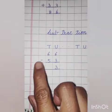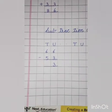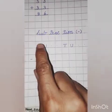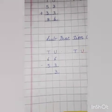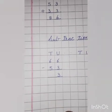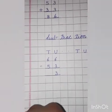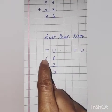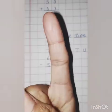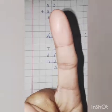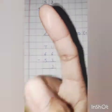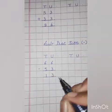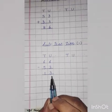Tens side: 6 minus 5. Throw 5, count till 6. What comes after 5? 6. How many fingers are left? 1. The answer is 1. So the full answer is 13.